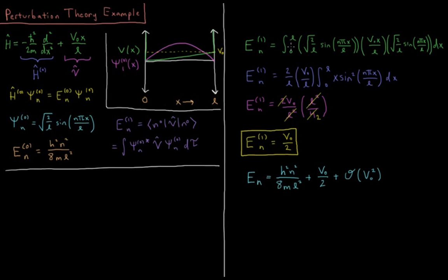So this will be an integral from 0 to L with respect to x. ψ star is just ψ, there's no i, no imaginary component, so the wave function complex conjugate is just the wave function. So integral 0 to L, square root 2 over L, sin nπx over L, perturbation operator V0 x over L, times the wave function, square root 2 over L, sin nπx over L.